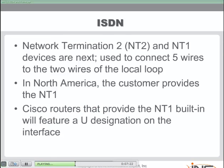There are also Network Terminal 2 and Network Terminal 1 devices. Moving from the ISDN devices themselves toward the ISDN provider, NT2 and NT1 are translation devices for the media. They convert the 5-wire connection on the terminals into a 2-wire connection for the local loop — the cabling that runs into the home or business. In North America, the customer is responsible for the NT1, while in other parts of the world the service provider handles it.